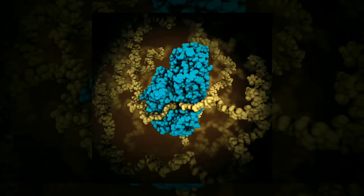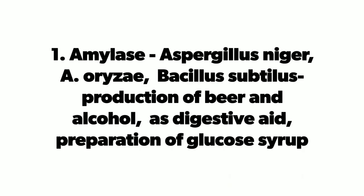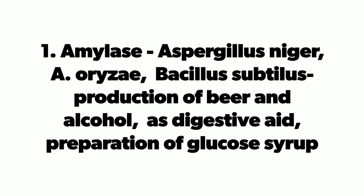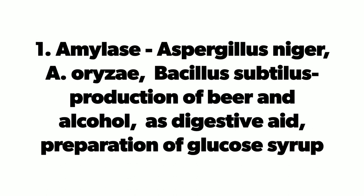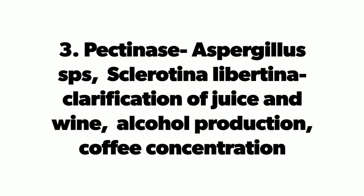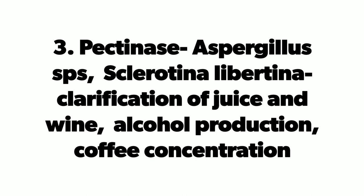A selected list of microbial enzymes and their applications: Amylase is produced by Aspergillus niger, Aspergillus oryzae, and Bacillus subtilis; it is used for beer and alcohol production, as a digestive aid, and for preparation of glucose syrup. Cellulase is produced by Aspergillus niger; it is used for starch hydrolysis. Pectinase is produced by Aspergillus species and Sclerotinia sclerotiorum; it is used for clarification of juice and wine, alcohol production, and coffee concentration.